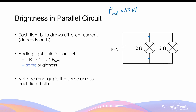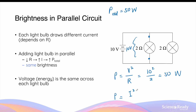Now that we've added a second identical light bulb in parallel, the voltage across each light bulb still remains at 10 volts. We can simply calculate the power of each light bulb by taking V squared divided by the resistance: 10 squared divided by 2, which also gives us 50 watts of power. We can also consider the equation I squared times R. To do this, we first calculate the total resistance of the parallel circuit by combining the reciprocals: one-half plus one-half equals one, so the total resistance is 1 ohm. Using Ohm's law, we divide 10 volts by 1 ohm to get a total current of 10 amps.